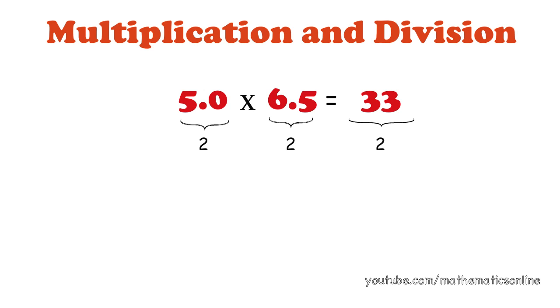Suppose we change 5.0 so that it has five significant figures. Does this change our answer? No, because 6.5 still contains only two significant figures. It is the lowest number of significant figures that we have and the answer should always have the same number. Therefore, the answer is still 33.